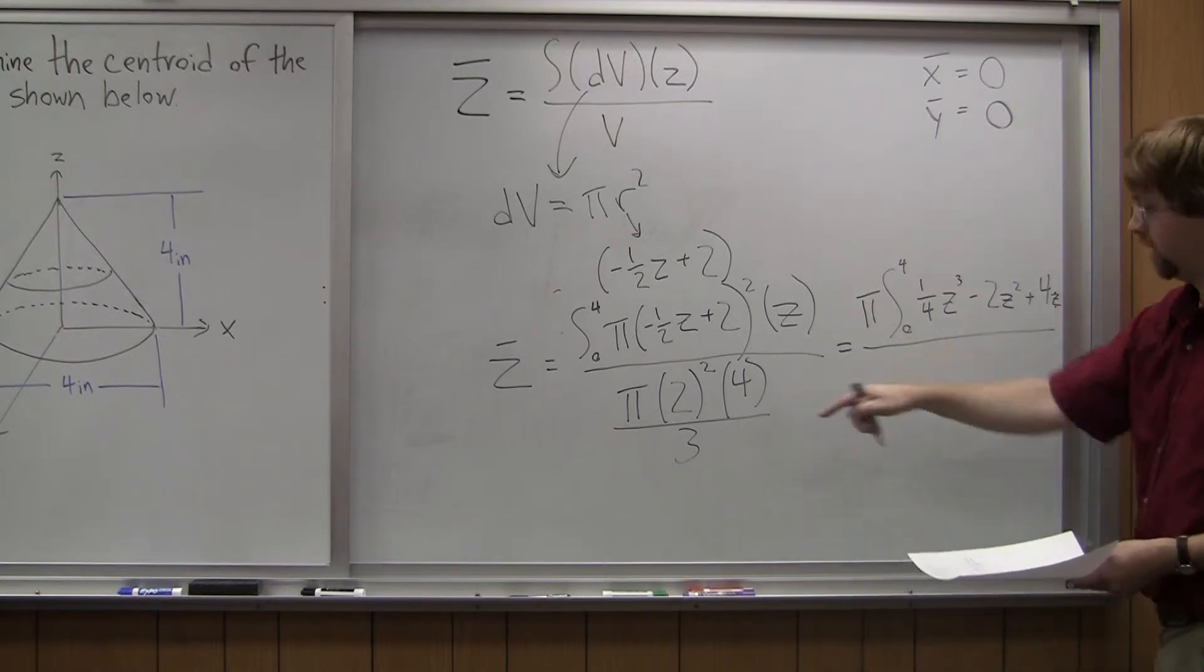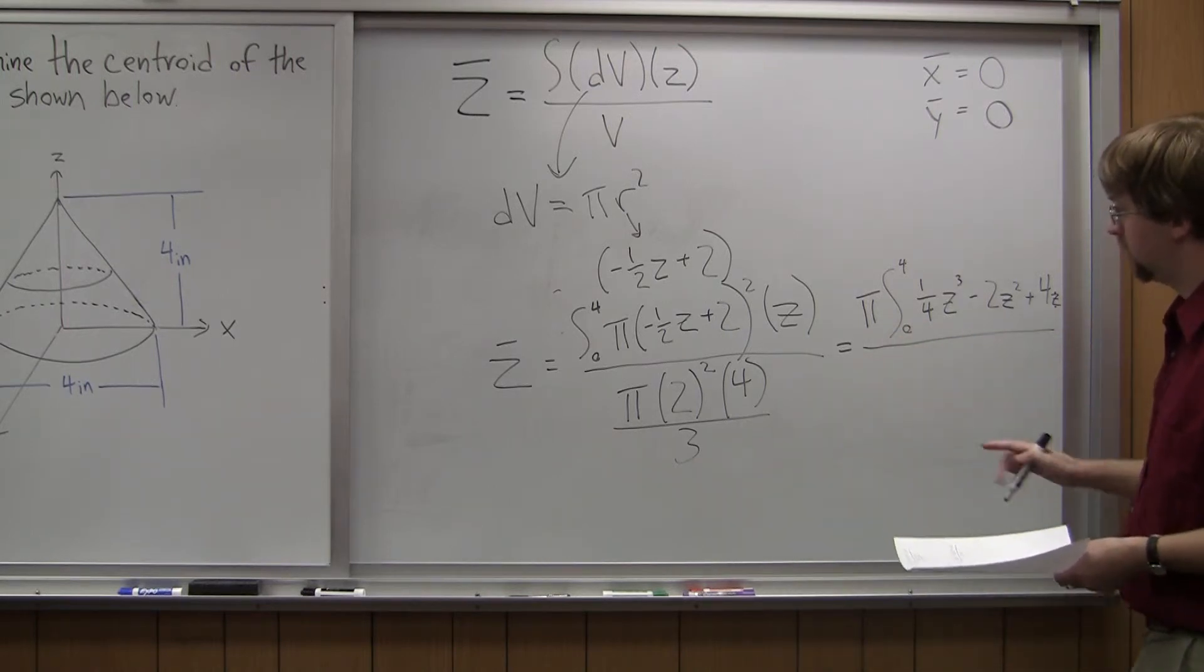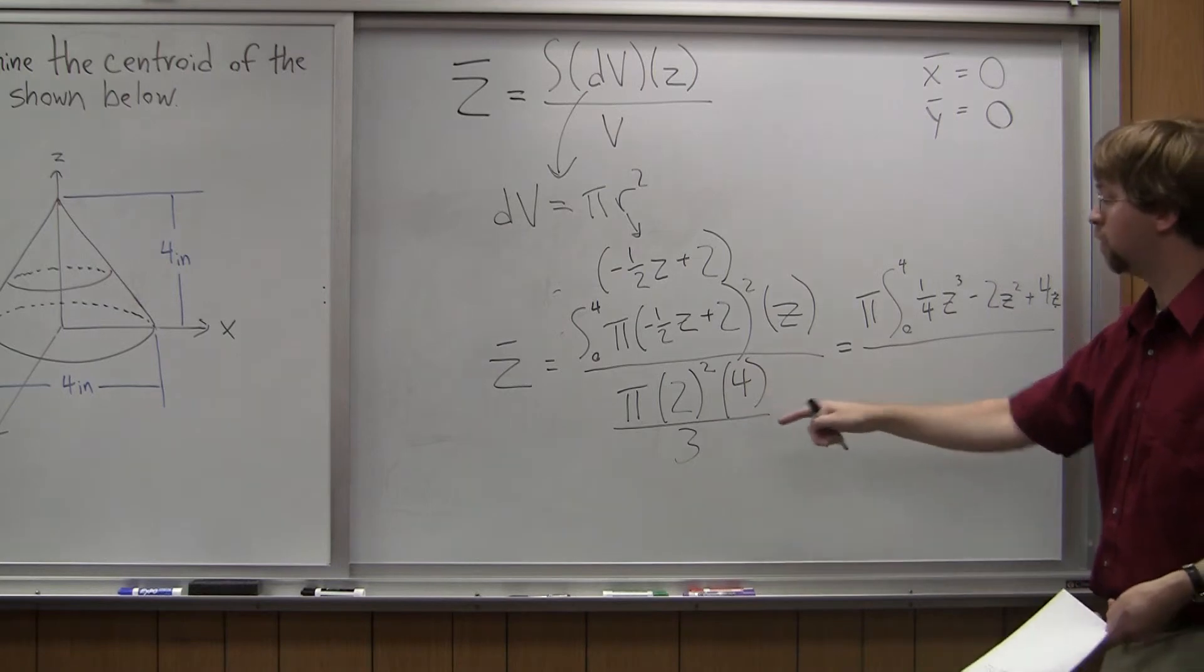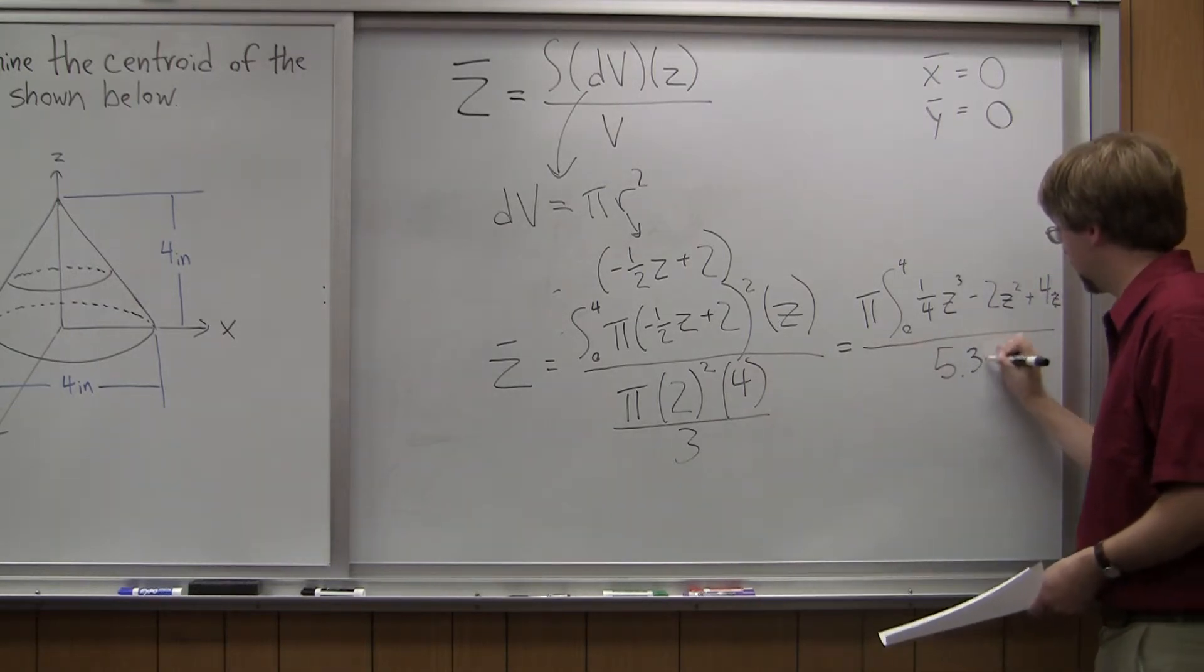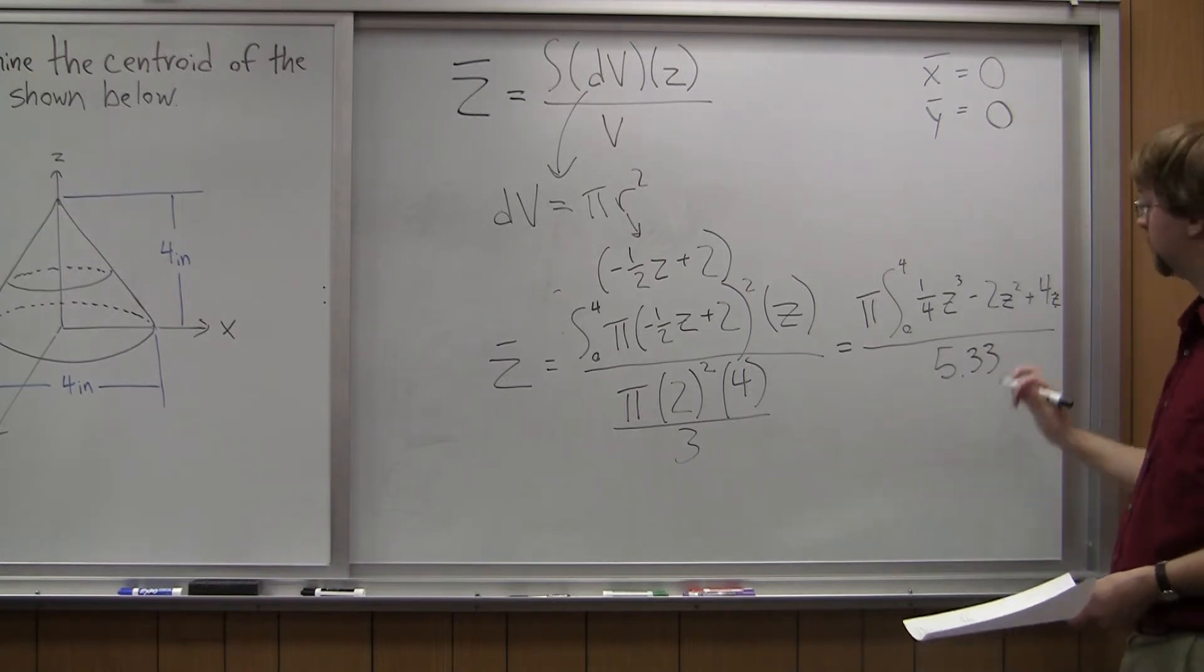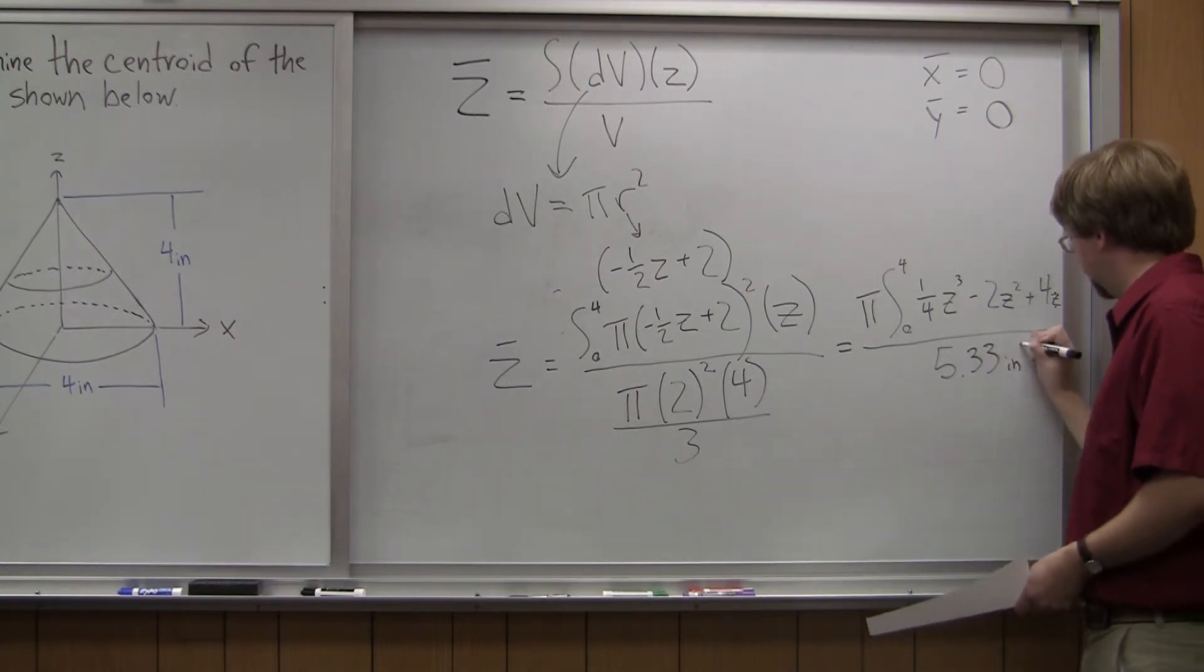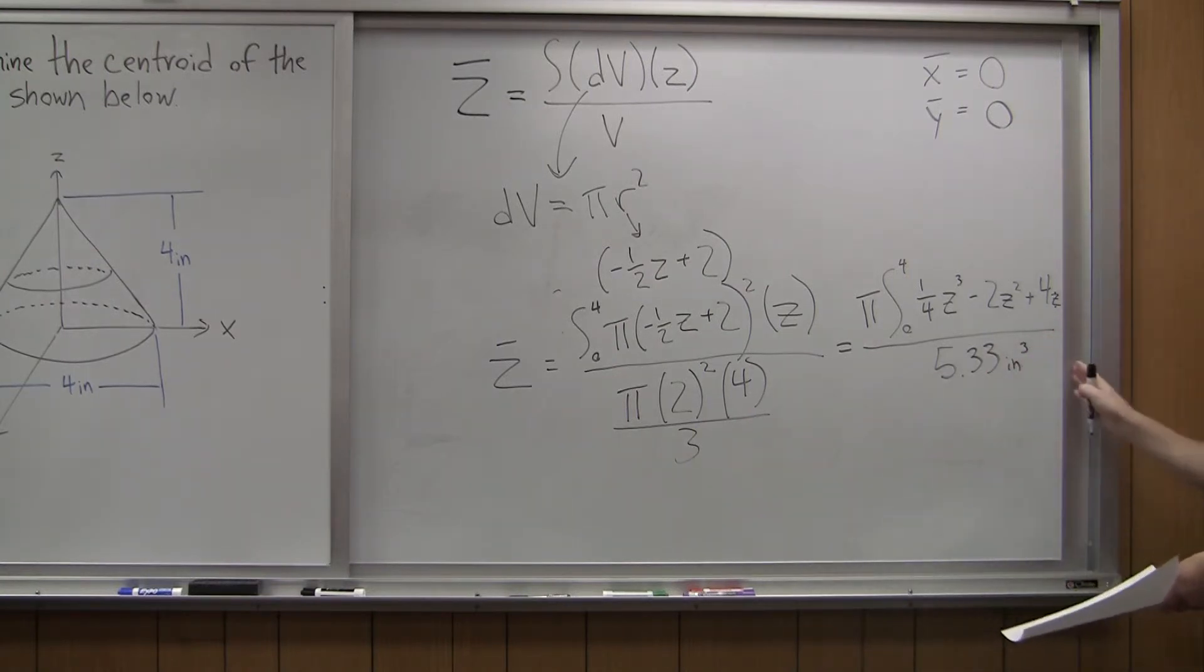And I divide that by my volume. So pi times two squared times four divided by three. I get an overall volume of 5.33. And the units were inches, so inches cubed.